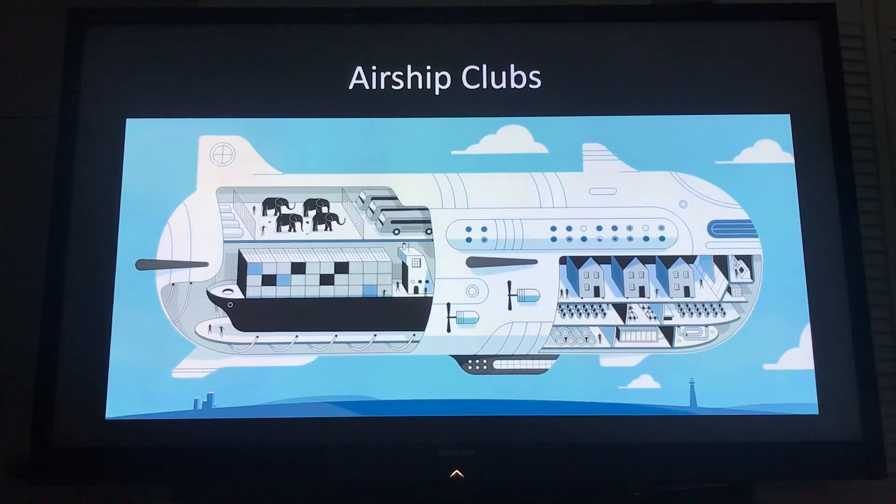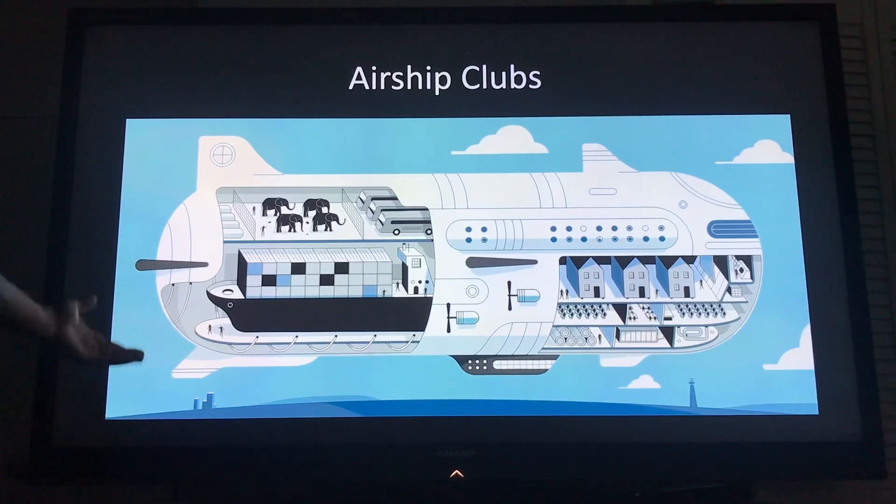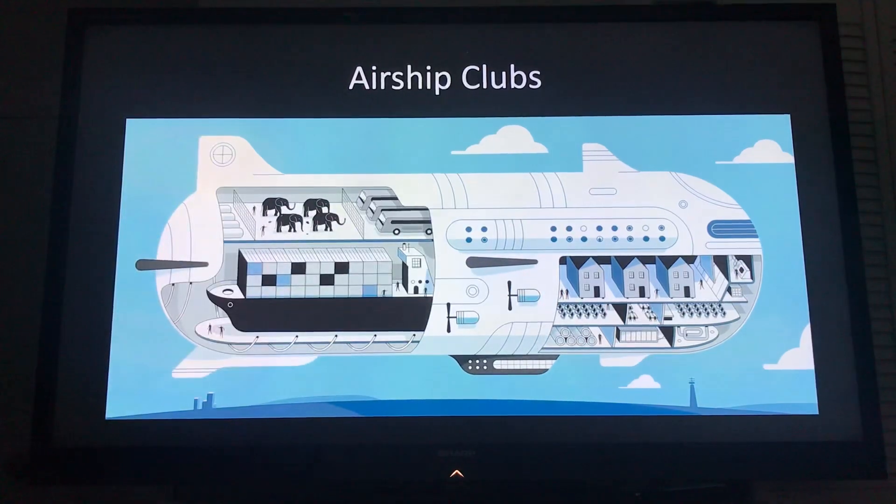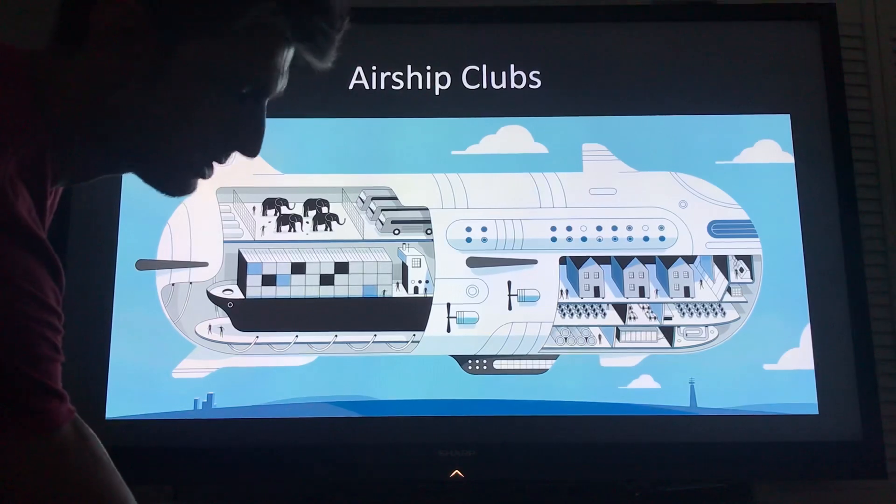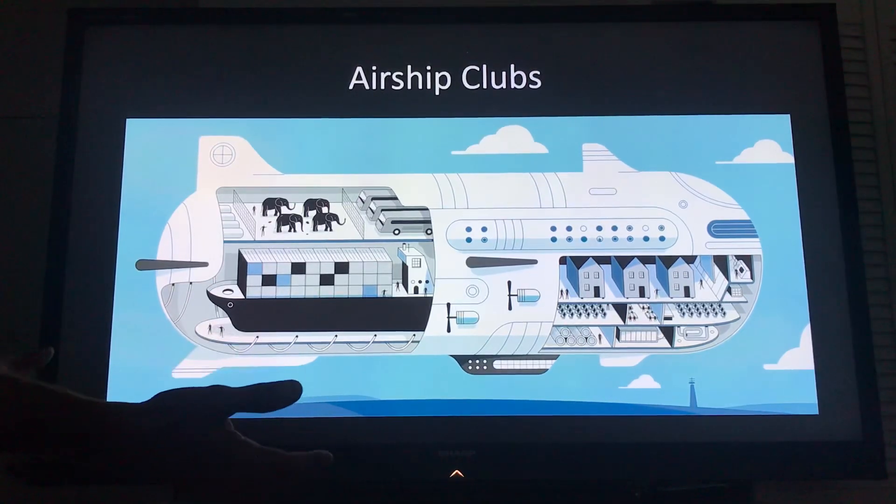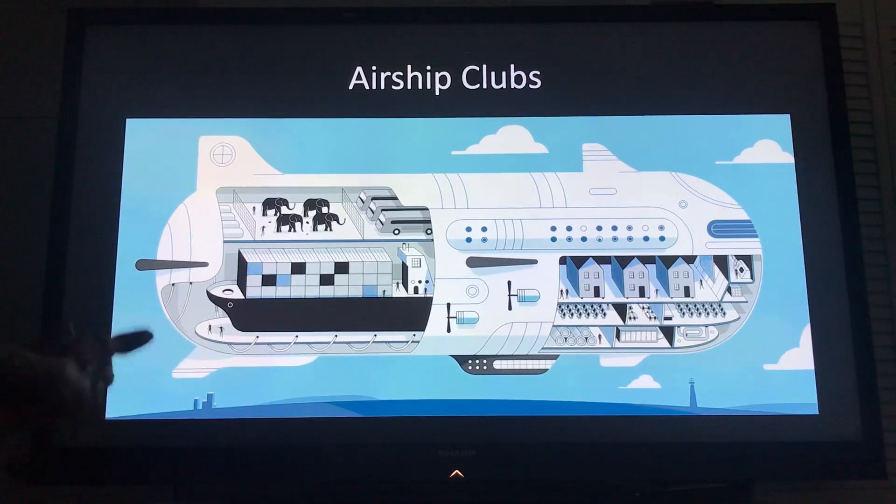And this is just an example that someone else drew up again and here you can see this airship has elephants in it, homes in here, movie theater. Basically you can just make flying structures, giant balloons. It's like the wealthiest and the elitist boat club, right, the airship club.